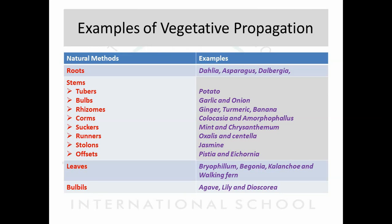One more important structure: bulbils in Agave, Lily, and Dioscorea. These are specialized plants in which bulbils — special kinds of structures — develop on the plant body and help to develop a new plant body. These are different examples of vegetative propagation considered as natural methods, meaning without any artificial conditions they naturally grow.